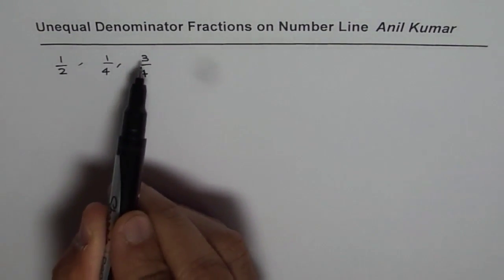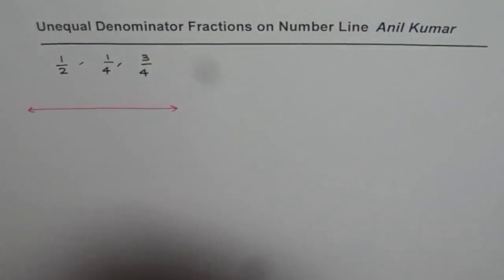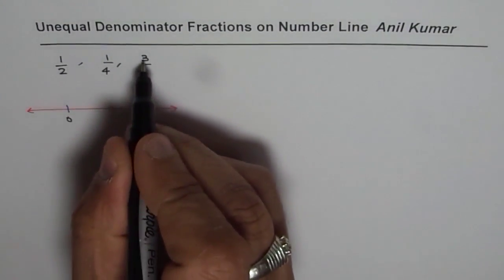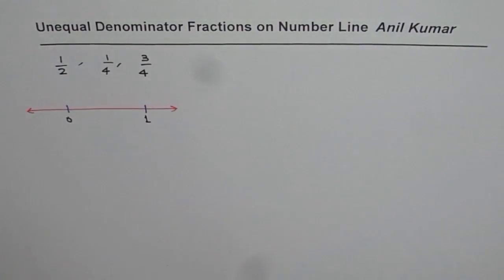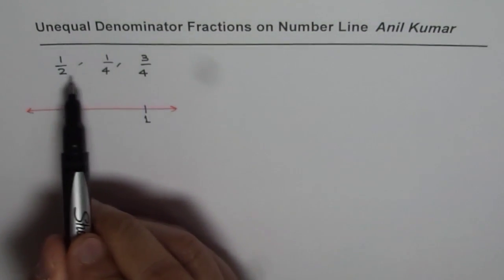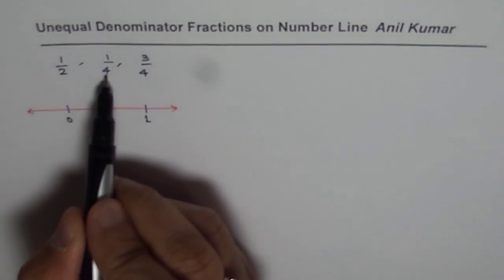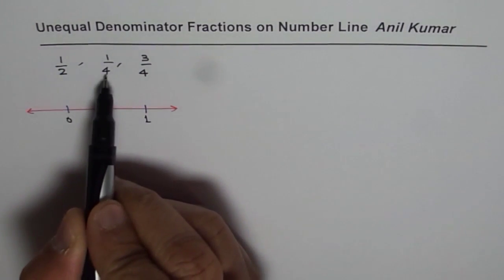Well, as you know, 1/2, 1/4, and 3/4 are all less than 1. So if we want to represent them on a number line, we can write these numbers in between 0 and 1. Half, 1 over 4, and 3 over 4 will be somewhere between 0 and 1. One way is that we should write all of them with the same denominator. So they have different denominators, and the same denominator could be 4, since 4 is their lowest common multiple.